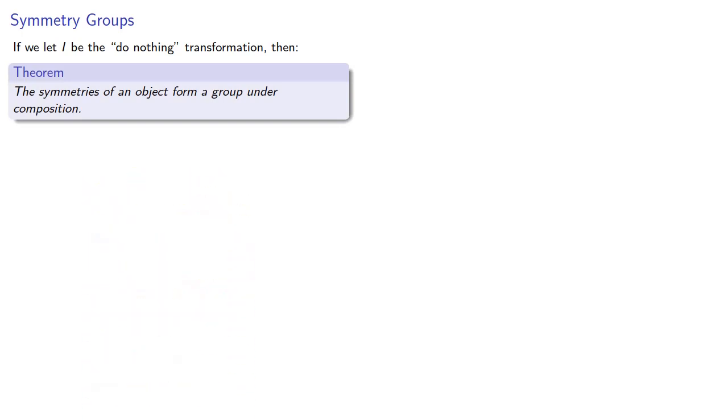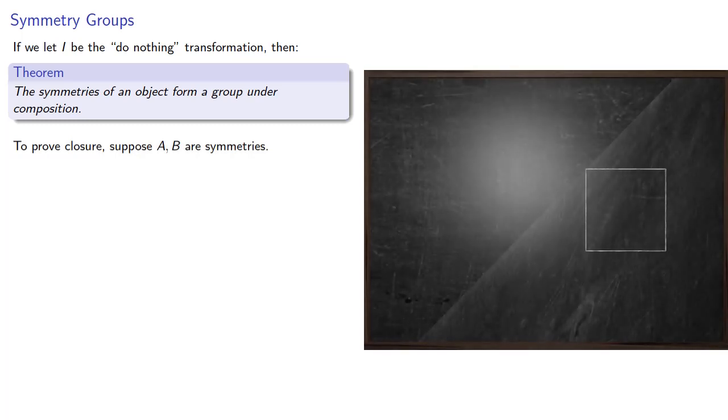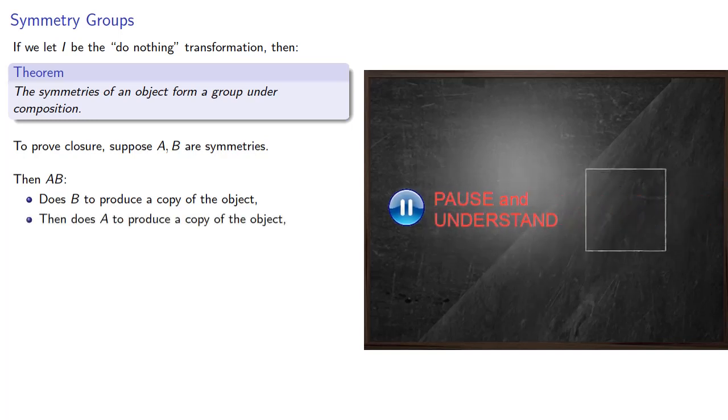Now, since this is a theorem, we should actually prove it, so let's prove closure. Suppose A and B are symmetries, then AB—remember that we're going to do B first, then A—so this does B to produce a copy of the object and then does A to produce a copy of the object. And so that means that AB produces a copy of the object, and so it's a symmetry. And so our set is closed under our binary operation.